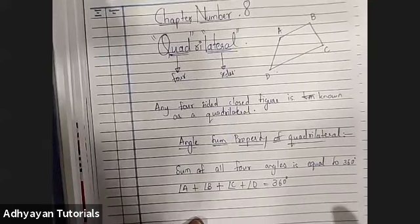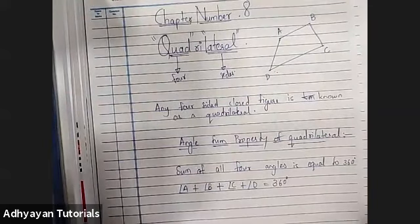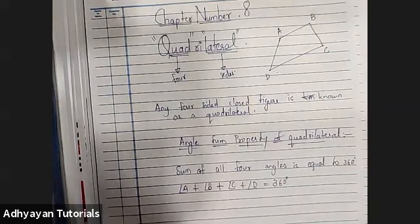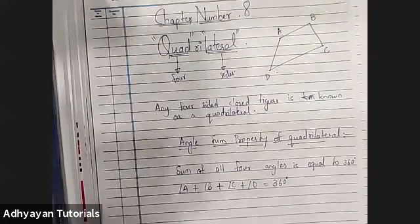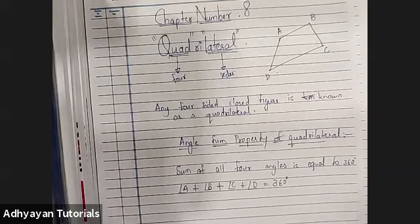I hope this much is clear. I want you all to copy whatever is visible to you. Give the heading as 'Quadrilateral', draw this figure, and note down all this. I'll give you a minute for it. You don't need a textbook — just a notebook and a pen. Let me know once you're done.